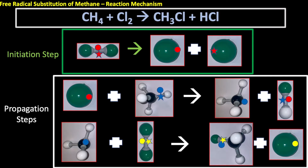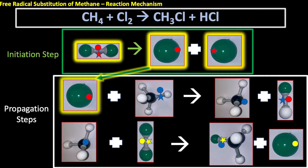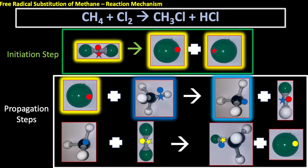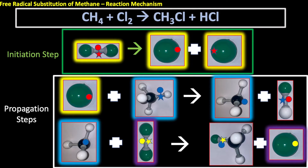In the initiation step we break the chlorine-chlorine bond — one electron goes to each chlorine atom, homolytic fission — giving us two free radicals. One of those is used in the propagation step; the other is not used during this reaction at all. That one free radical reacts with methane to produce the methyl free radical, and then that methyl free radical reacts with another chlorine molecule to give chloromethane and another chlorine free radical.